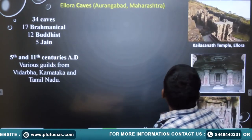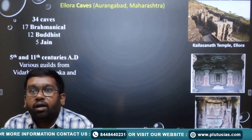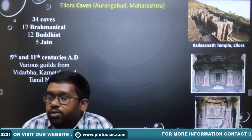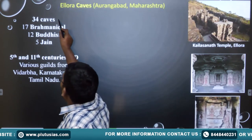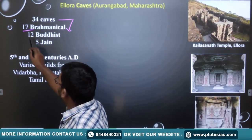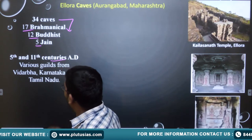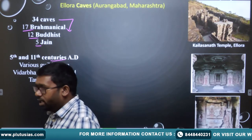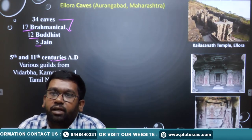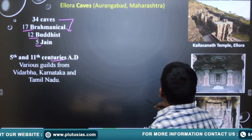Ellora caves represent three religions. There are 34 caves total: 17 belong to Brahmanism, 12 to Buddhism, and 5 to Jainism. These were made between the 5th and 11th century AD by various rulers — Chalukyas, Rashtrakutas, and others — in the Maharashtra region.